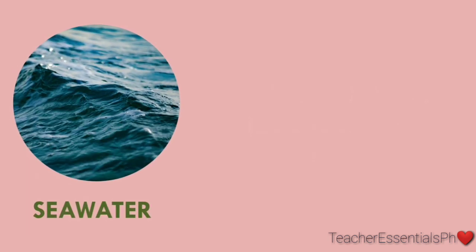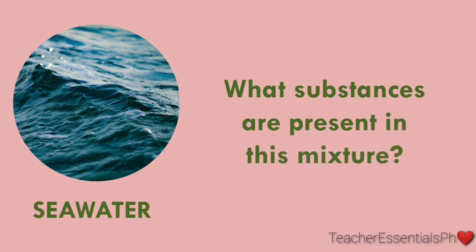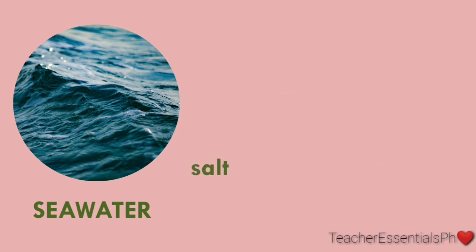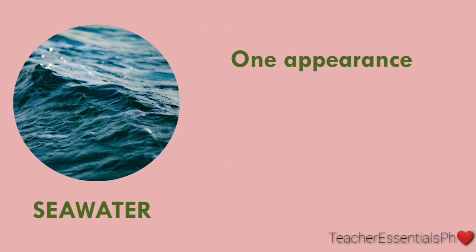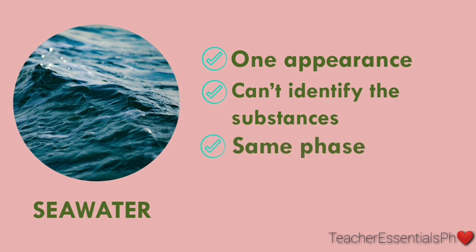Now, let's go on to the third one — the seawater mixture. What substances are present in this mixture? To make a seawater mixture, we need salt and water. Does the seawater mixture have one appearance? Yes, we can only see one appearance. Can you not identify the substances by your naked eye? Yes, we cannot tell where the salt or the water is. Does the whole mixture have the same face? Yes, and it only has liquid.